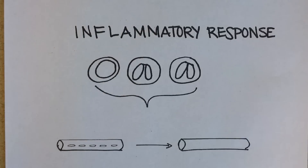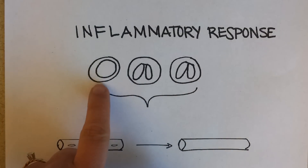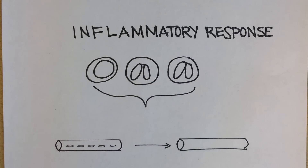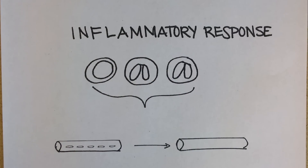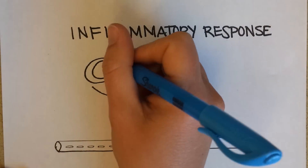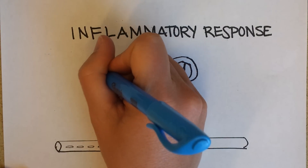So what triggers the inflammatory response? Well, it really comes down to cells. We're going to look at three main kinds of cells that are all important in triggering leaky blood vessels, which are what the inflammatory response is all about. I'm going to show you these three white blood cells and I want you to see if you can think of what type each one is.